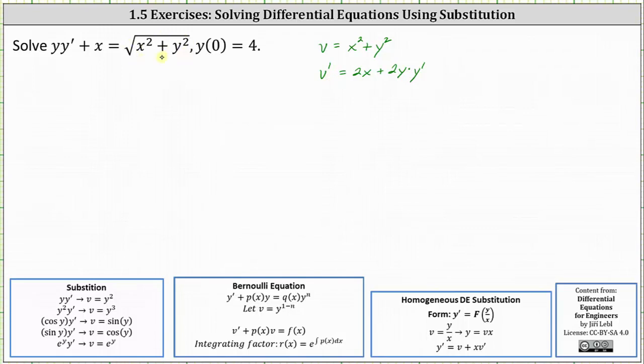Let's also write the square root using a rational exponent. This gives us 2y y prime plus 2x equals two times the quantity x squared plus y squared to the one-half power. And now we perform substitution.